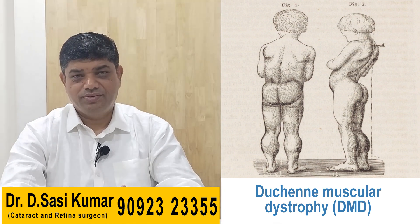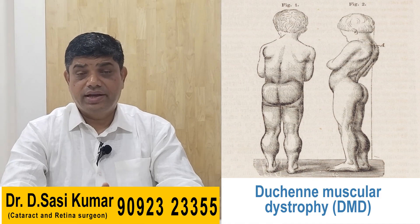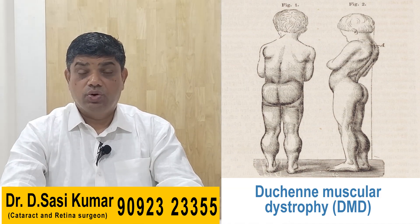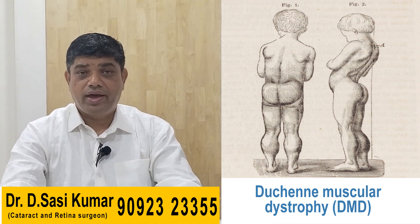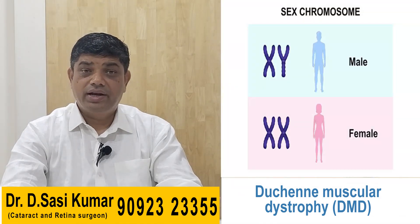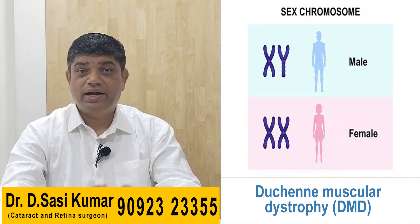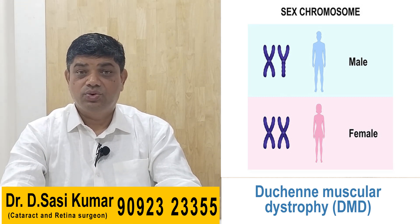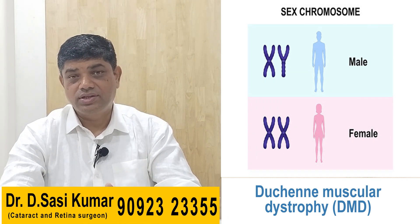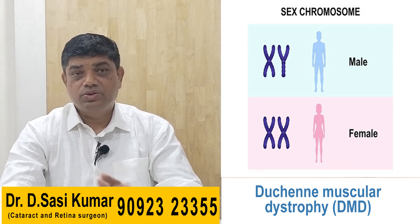Duchenne's muscular dystrophy is the topic today and it is an X-linked disorder, so it affects males more than females. Female children have two X chromosomes and male children have got only one X chromosome, and if that gets defected then the manifestation occurs, so that's why girl children are less affected.